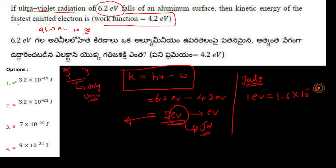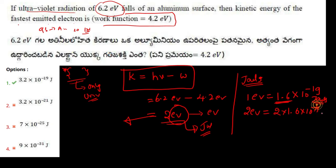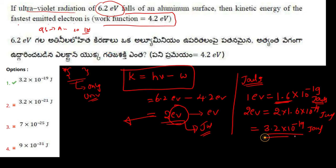1 eV is equal to 1.6 × 10⁻¹⁹ Joules. To get the value of 2 eV, multiply 2 by this value: 2 × 1.6 × 10⁻¹⁹ Joules = 3.2 × 10⁻¹⁹ Joules. So this is your answer.